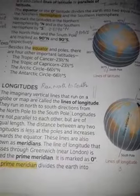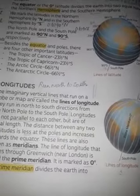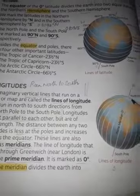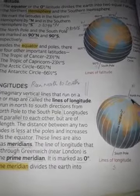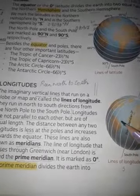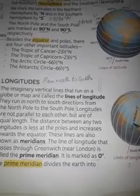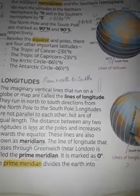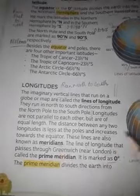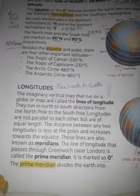The distance is less at the poles. These lines are also known as meridians. Longitudes are also known as meridians.